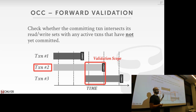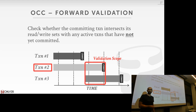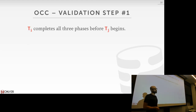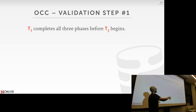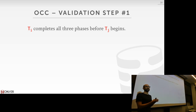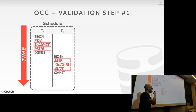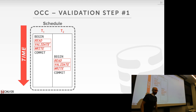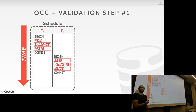For the rest of this lecture, assume we're always doing forward validation. There are a few scenarios to handle. Scenario 1: if Ti completes all phases before Tj begins anything — this is the simple happy path, essentially collapsing to serial execution. Scenario 2: Ti completes its write phase before Tj begins its write phase — you must ensure the write set of Ti doesn't intersect with the read set of Tj.